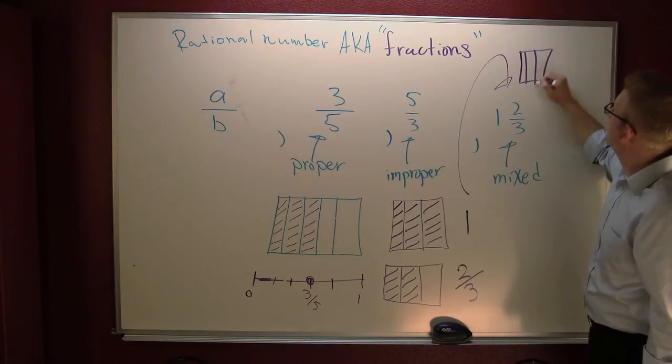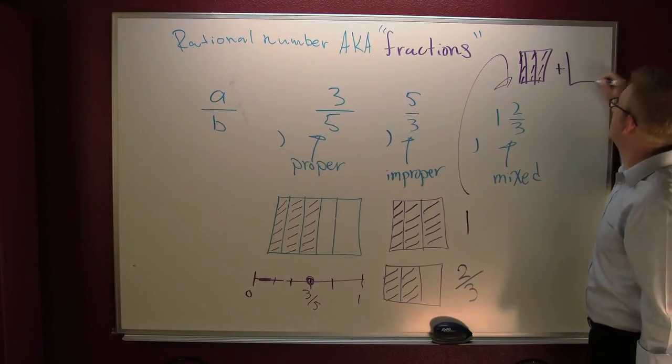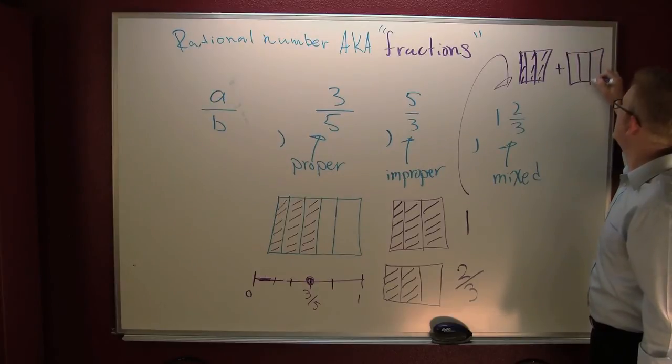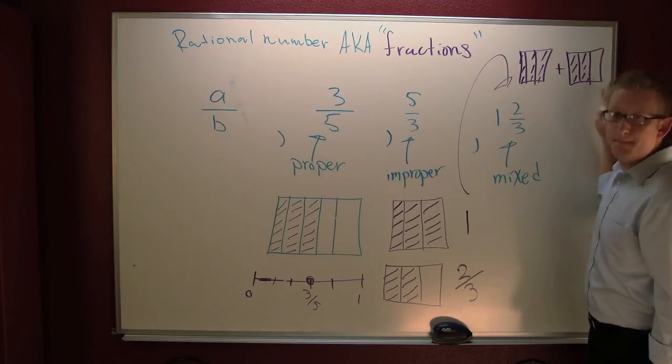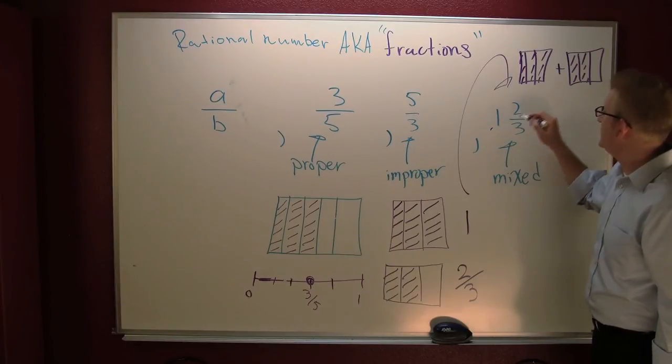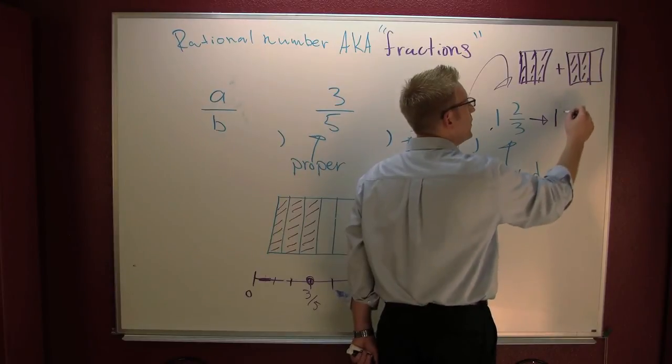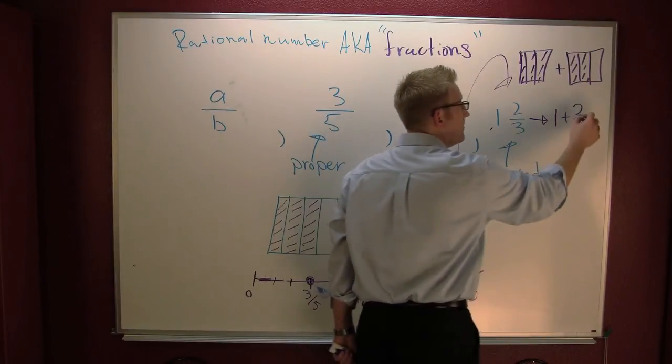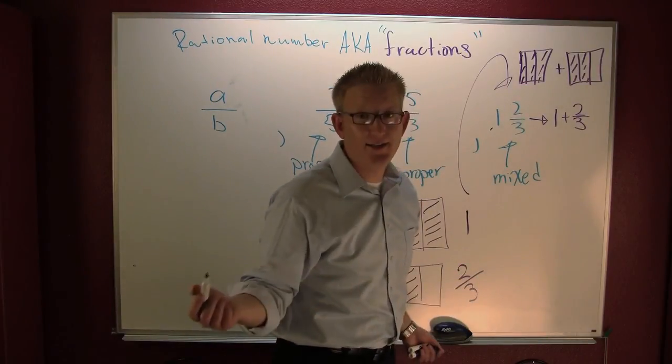This is 1 bar that's separated into thirds plus 1 bar separated into thirds. But you only have 2 of them. That's 1 and 2 thirds. And yes, this is the same thing as saying 1 plus 2 thirds. And many people lose sight of that. It's the idea of a fraction.